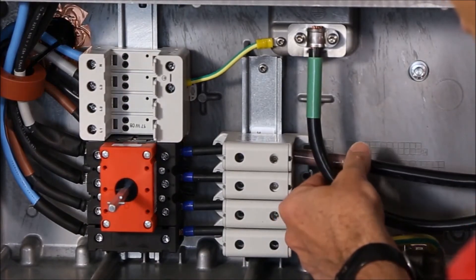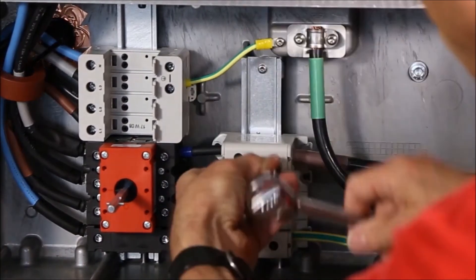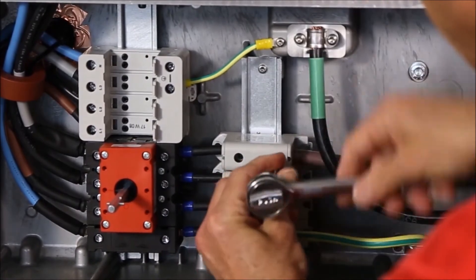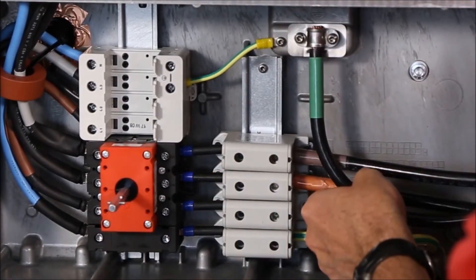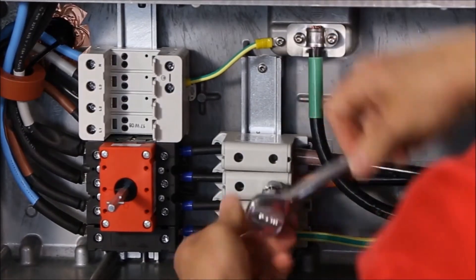Next, we release the screws on the AC connection block with the Torx 30 screwdriver, bring in the conductors to the lower AC connection opening, and insert them on each of the three connection points. Tighten them down with the Torx 30 screwdriver.